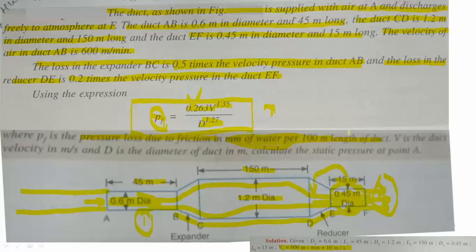The unit of pressure loss from this equation is millimeters of water per 100 meters length. V is the duct velocity in meters per second — velocity must be in meters per second. D is the diameter in meters — we take D in meters only, indicating the diameter of the duct.